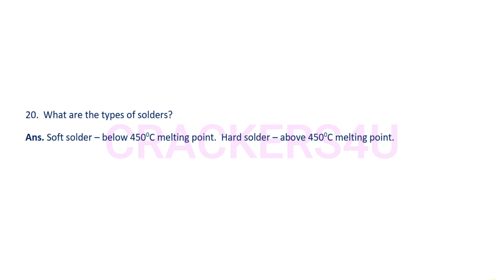Question number twenty: The types of solders are soft solder and hard solder. Soft solder has a melting point below 450 degrees Celsius and hard solder has a melting point above 450 degrees Celsius. Solders are bonding filler metals — pure metals or alloys — used in the soldering process.